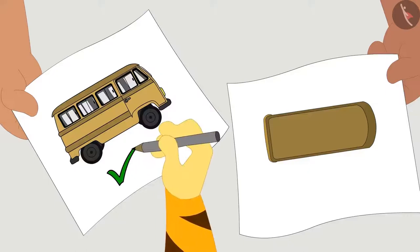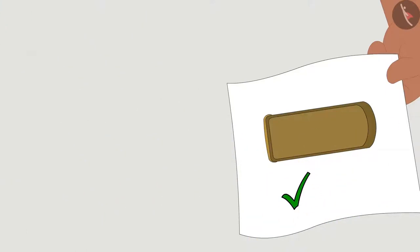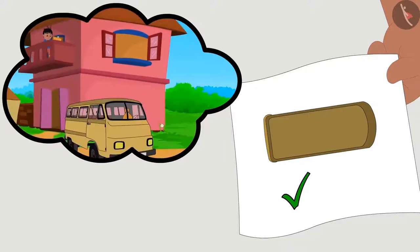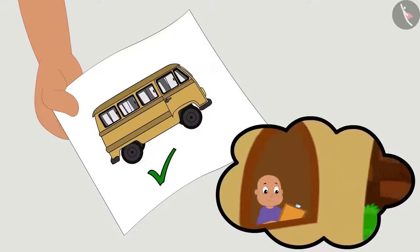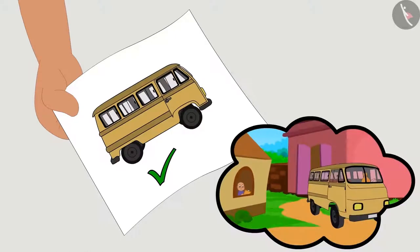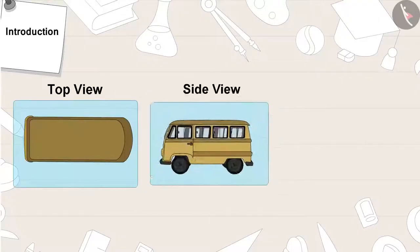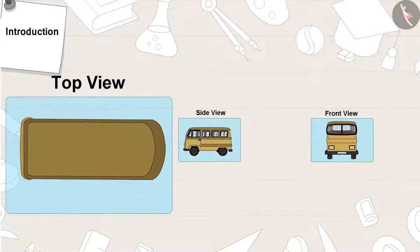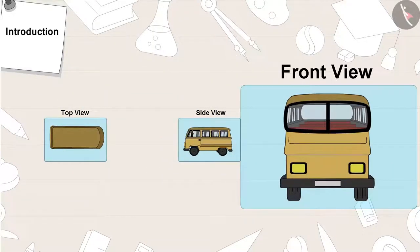In fact, the drawings of both Raju and Bablu are correct. Raju had drawn the top view of the bus, whereas Bablu saw the bus from the side while drawing it. All objects can be viewed from three different sides: from the above, that is top view, side view, and front view.